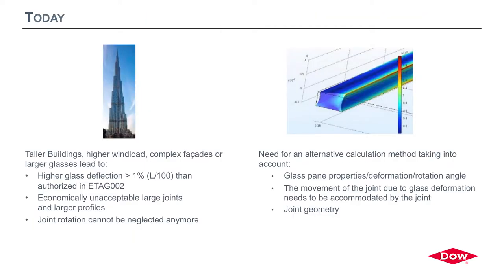Today we are dealing with ambitious buildings. Wind loads are of course more than 5,000 pascal, glass pane dimensions are huge, and we are seeing deflections typically above L/100. The ETAC equations are not valid when the boundary conditions required for their validity are no longer respected. And even if customers want to apply them, this high wind load will result in a joint that is economically and aesthetically not pleasing.